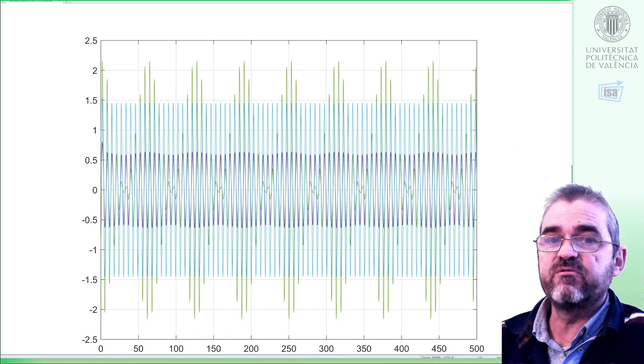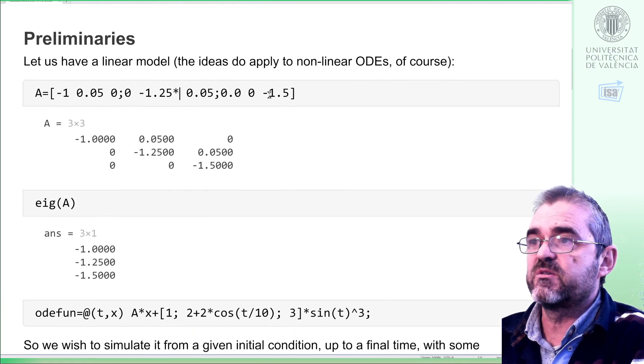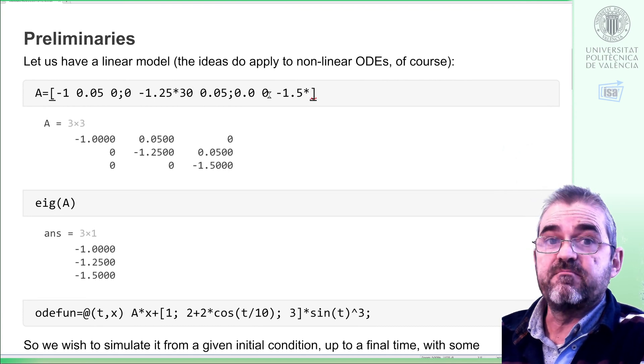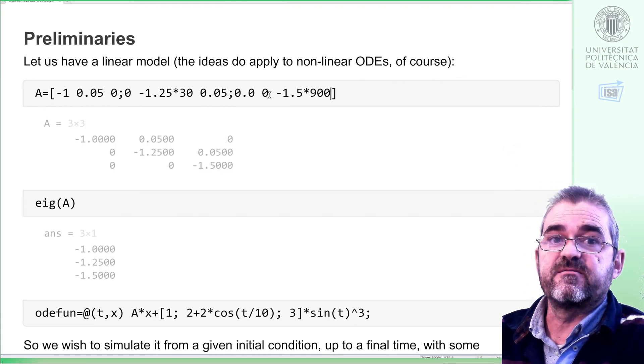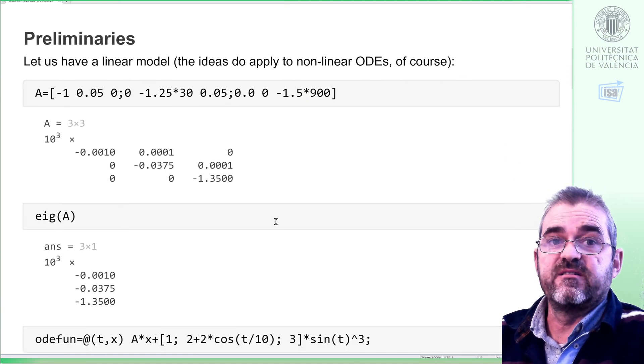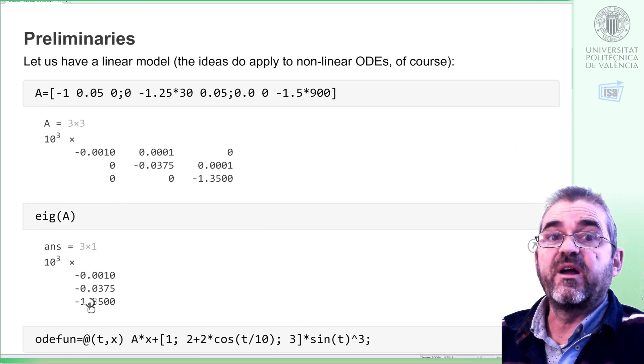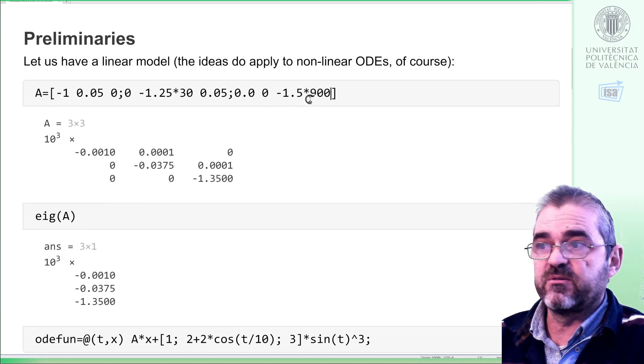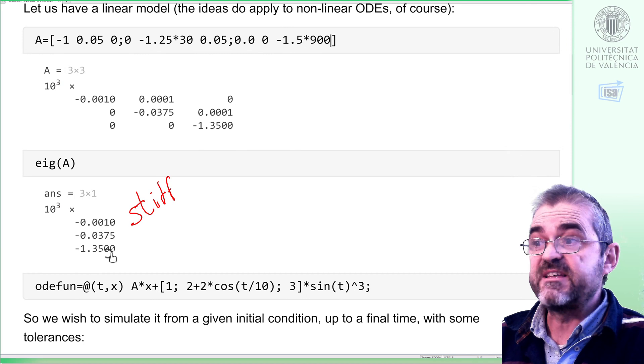But let us now consider a stiff problem in which I make this time constant 30 times faster, and I make this other one 900 times faster. So I have 1 to 1.5 different in time constant in the previous example, and in here, it's more than 1000, the difference between the slow pole at minus 1 and the fastest pole at minus 1350. So now this is a stiff case.